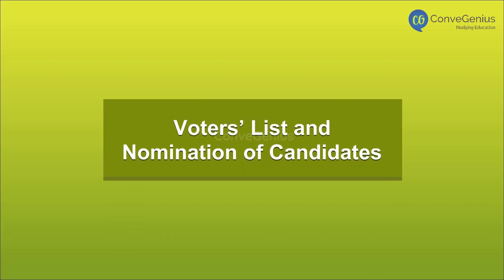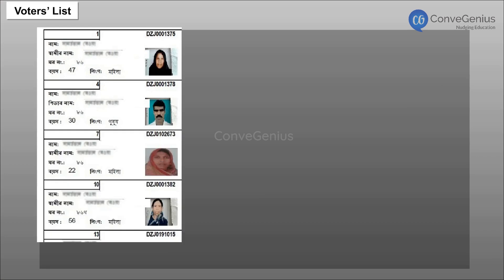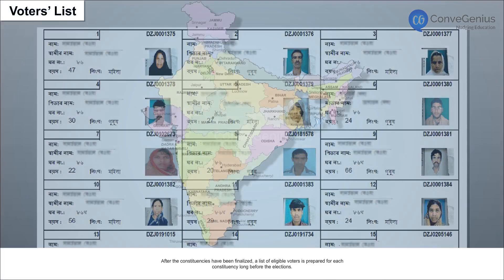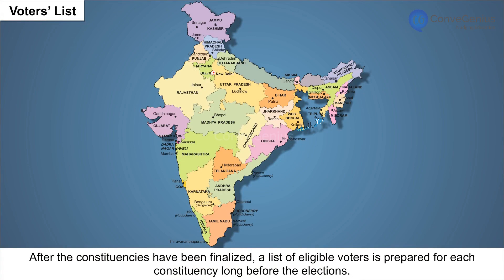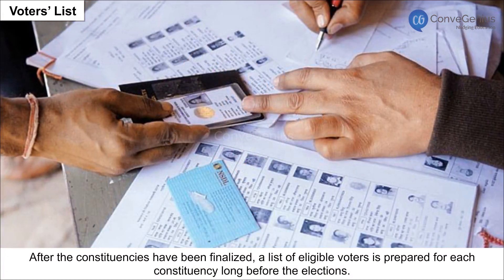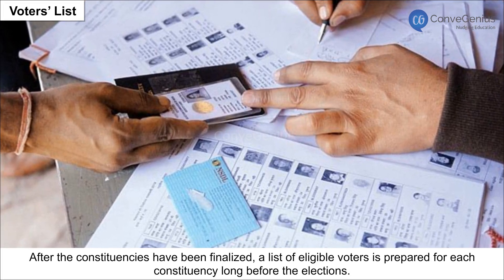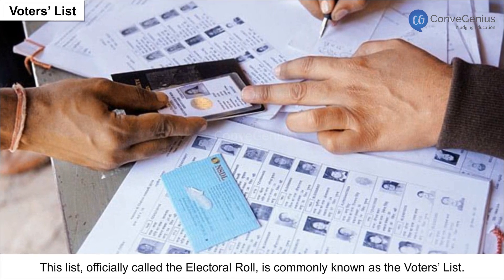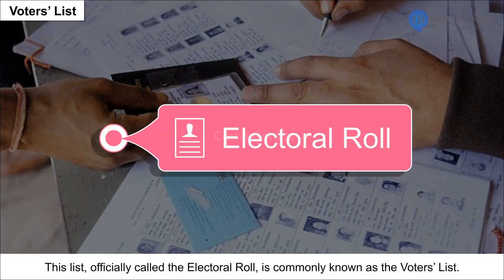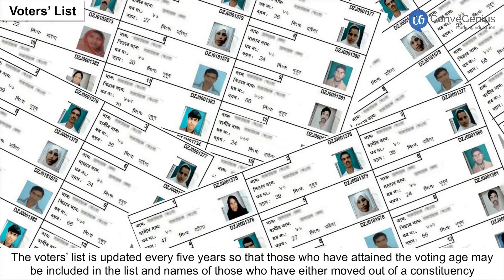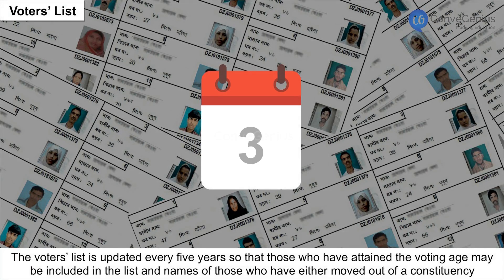After the constituencies have been finalized, a list of eligible voters is prepared for each constituency long before the elections. This list, officially called the electoral roll, is commonly known as the voters list. The voters list is updated every 5 years so that those who have attained the voting age may be included.